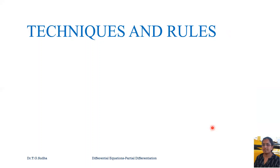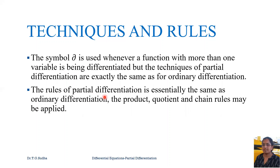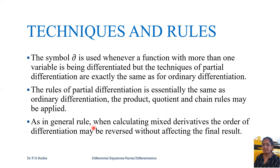Now let us go through the techniques and rules. The symbol ∂ is used whenever a function with more than one variable is being differentiated, but the techniques of partial differentiation are exactly the same as for ordinary differentiation. The rules are essentially the same — the product, quotient, and chain rules may be applied. As a general rule, when calculating mixed derivatives, the order of differentiation may be reversed without affecting the final result.